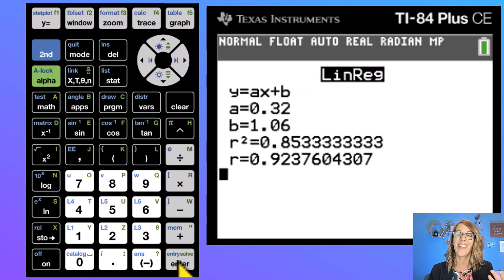Okay yay, so I've got not just my regression equation with a as 0.32 and b as 1.06 but I also have r squared and r.